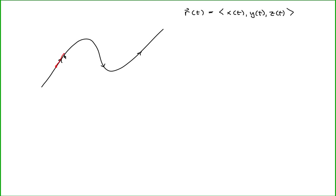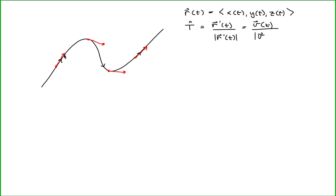Let's look at unit tangent vectors at various points along our curve. A unit tangent vector is defined as the derivative of our position vector divided by the magnitude of the derivative of our position vector. We call the derivative of our position vector the velocity of the curve, and the magnitude of the velocity is the speed of the curve.